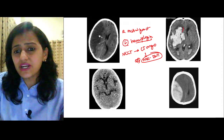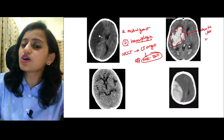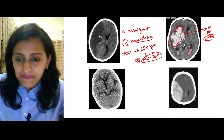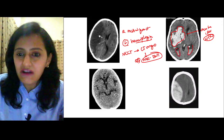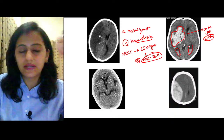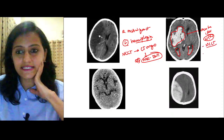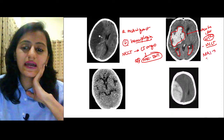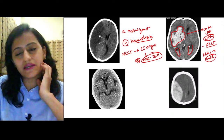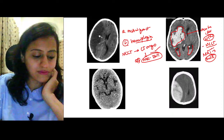This is acute intraparenchymal hemorrhage — most common cause is hypertension, most common area is basal ganglia. In this patient there is also intraventricular hemorrhage with dilated ventricles. For acute hemorrhage the investigation of choice is non-contrast CT. For chronic hemorrhage it is MRI — specifically susceptibility weighted imaging (SWI). For infarct, use diffusion weighted imaging (DWI).